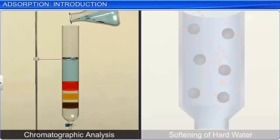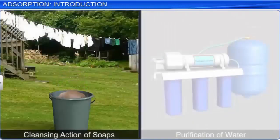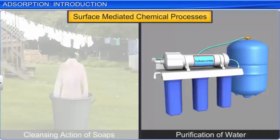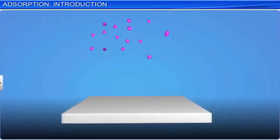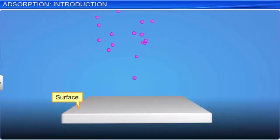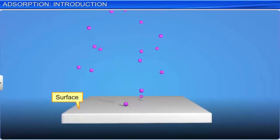Chromatographic analysis, softening of hard water, the cleansing action of soaps and purification of water are all surface-mediated chemical processes. In these examples, the reactions occur at the surface. The branch of chemistry that deals with the study of phenomena that occur on the surface or interface, i.e., at the boundary separating two bulk phases, is known as surface chemistry.